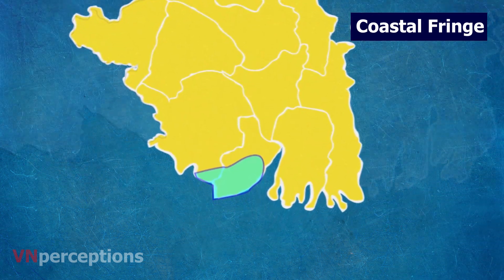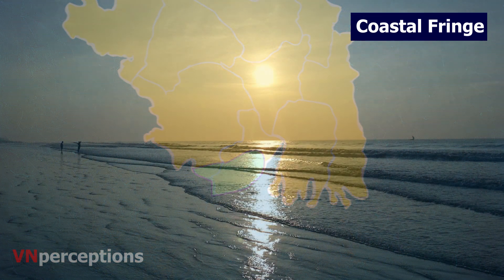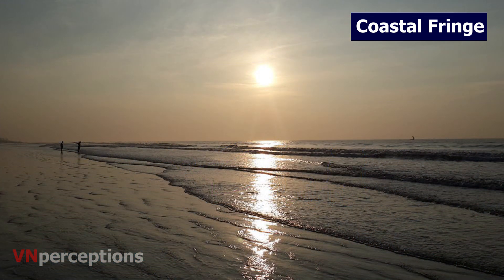The coastal plain region is on the extreme south of the state. The part of the district of Purba Medinipur along the Bay of Bengal constitutes the coastal fringe. The topography in this strip land is related to the sea. The beach at Digha in this region is a fast-developing sea resort and becoming an important tourist spot. This emergent coastal plain is made up of sand and mud deposited by rivers as well as wind. Parallel to the coast are colonies of sand dunes and marshy areas.